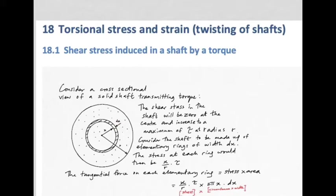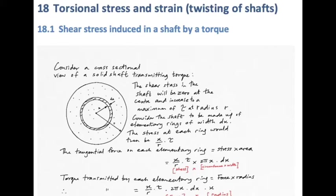Next, we break up this cross-section into elementary rings or slices and look at the torque each slice carries. There are an infinite number of these slices because they are elementary — of negligible thickness. Considering the stress on one elementary ring, which is x over r times tau (the maximum stress), multiplying by its area gives the tangential force acting on it. Multiplying that by radius gives the torque carried by that elementary ring.